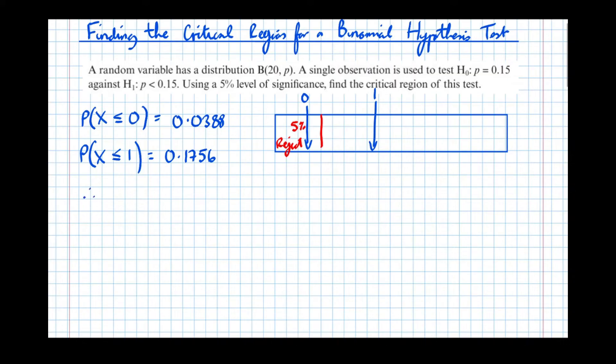Therefore, and this is the way you should write it, critical region is x less than or equal to 0. However, in binomial, we can't get any numbers less than 0. So another acceptable way of writing it is x equals 0.